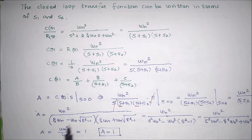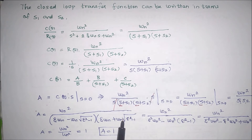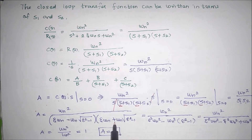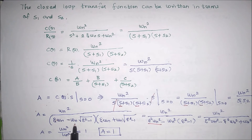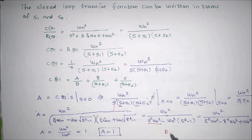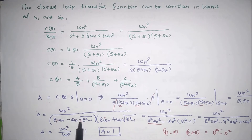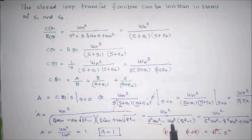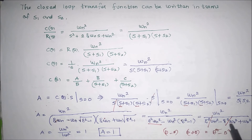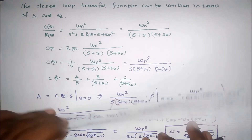Substituting s1 and s2 values: s1 times s2 is of the form (a minus b)(a plus b), which equals a squared minus b squared. Here a is minus eta*omega_n and b is omega_n*sqrt(eta squared minus 1). After expanding and simplifying, the cross terms cancel, and we get omega_n squared divided by omega_n squared, so A equals 1.